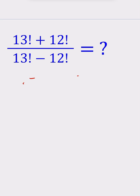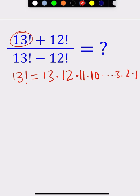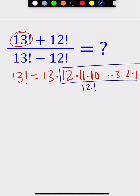A calculator can do it, but we're going to take a smarter approach. When you expand the bigger factorial, 13, you realize 13 factorial is 13 times 12 times 11 times 10 and continuing all the way down to 2, 1. But isn't that part another factorial? Yes — it is 12 factorial. So 13 factorial can be written as 13 times 12 factorial.